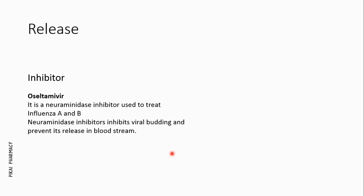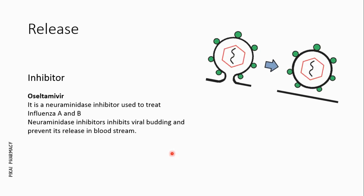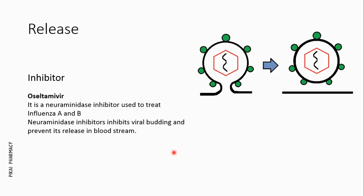The final step of viral infection is the release of virus to the outside of the host cell. There are neuraminidase inhibitors that inhibit viral budding and prevent release into the bloodstream. An example is oseltamivir, which is used in the treatment of influenza A and influenza B.